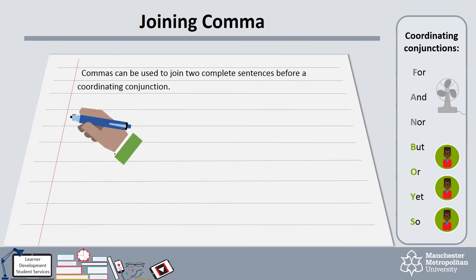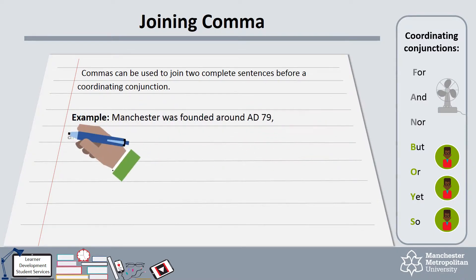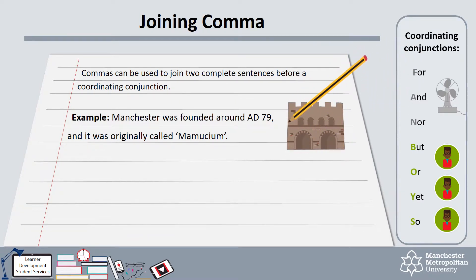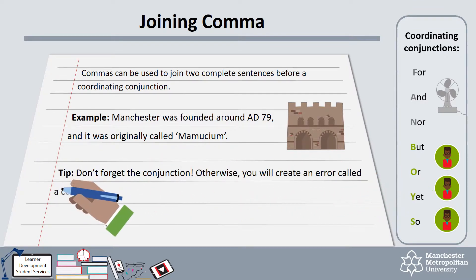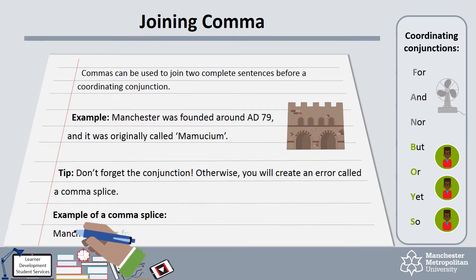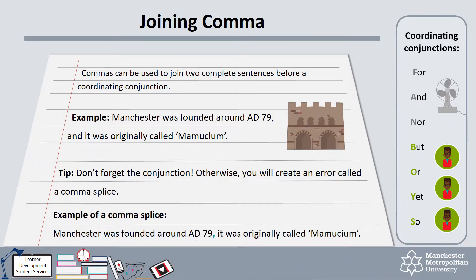An example of this type of comma is: Manchester was founded around AD 79, and it was originally called Mamookium. Do not forget to include your FANBOYS conjunction. If you join two sentences together without the conjunction, you have created an error called a comma splice, which is not a good idea in academic writing. For example: Manchester was founded around AD 79, it was originally called Mamookium — this is not correct.